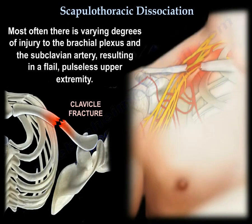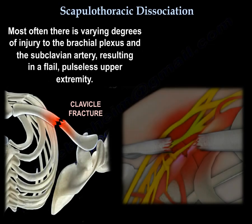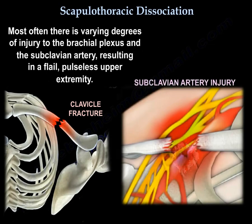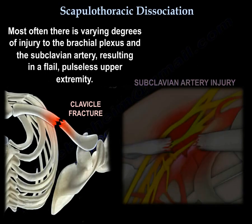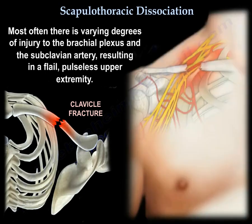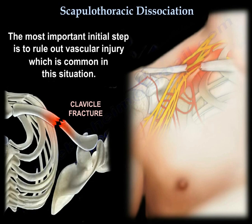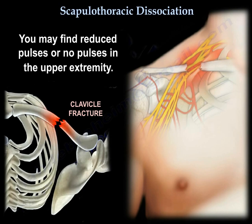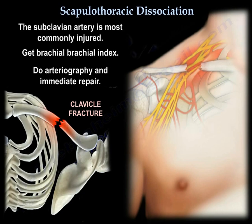Most often, there is varying degrees of injury to the brachial plexus and the subclavian artery, resulting in a flail, pulseless upper extremity. The most important initial step is to rule out vascular injury, which is common in this situation. You may find reduced pulses or no pulses in the upper extremity. The subclavian artery is most commonly injured.